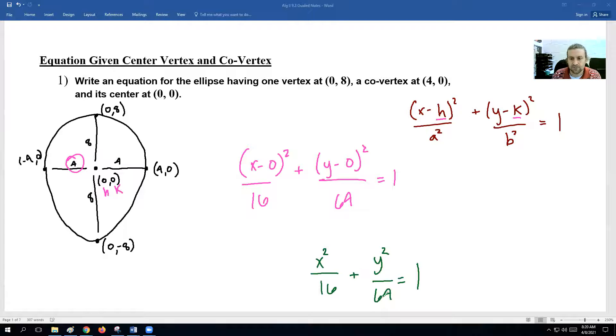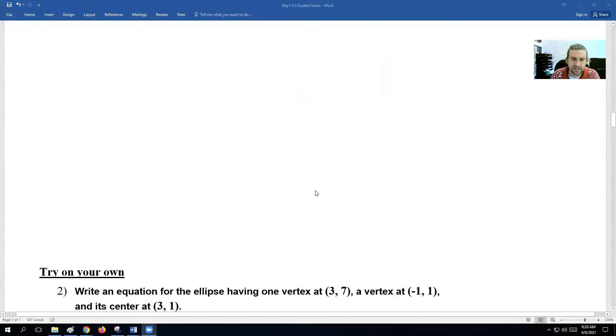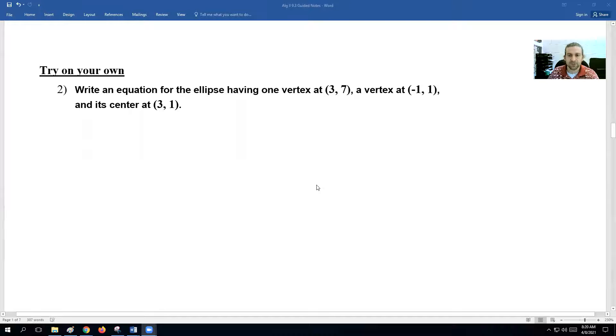So the one thing to note here about the equation is wherever you see the bigger number on the denominator, that's where the major axis is at. And you can see the bigger numbers underneath the y, which means this graph would be y-oriented or a y-axis ellipse. It's a tall, skinny one. All right, why don't you guys give this a second. Try this next one on your own. I'll wait like 30 seconds. You can pause the video, and we'll see if we did this right.